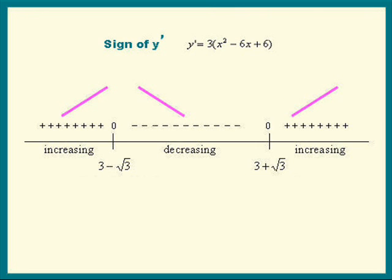At 3 minus square root 3, we have a relative max. And at 3 plus square root 3, we have a relative min.